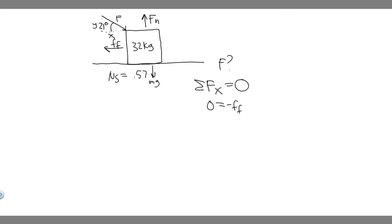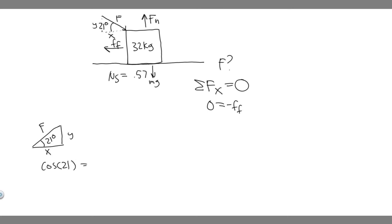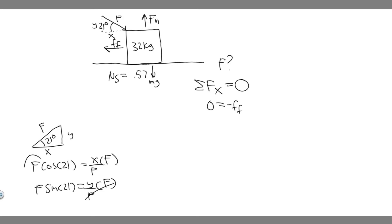What we're going to do now is find the x and y components of this force by drawing a triangle. The angle of our triangle is 21 degrees, and the hypotenuse is just the value F — the force we're going to be applying. Using trig: the cosine of 21 equals adjacent over hypotenuse, which is x over F, so the x-component is F times cosine of 21. For the y-component, sine of 21 equals opposite over hypotenuse, which is y over F, so the y-component is F times sine of 21.